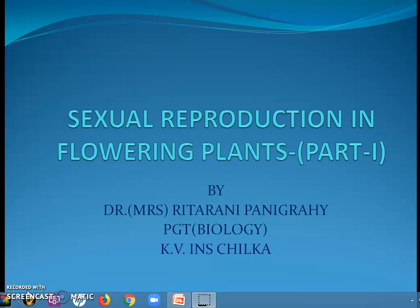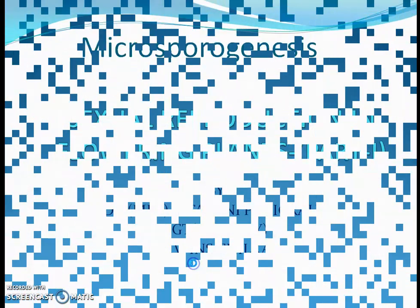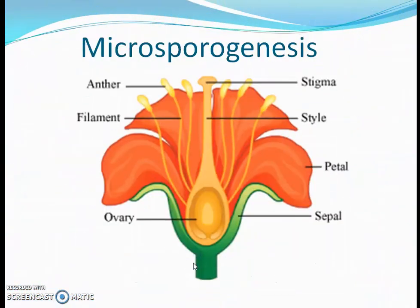Good morning children. Today we are going to start the next chapter, that is sexual reproduction in flowering plants. In this chapter we are going to learn about microsporogenesis. The first thing you have to learn is the structure of a flower. The flower has many parts and it is the most important part of the plant, because the flowering plants are able to reproduce sexually. A typical angiosperm flower consists of four whorls.